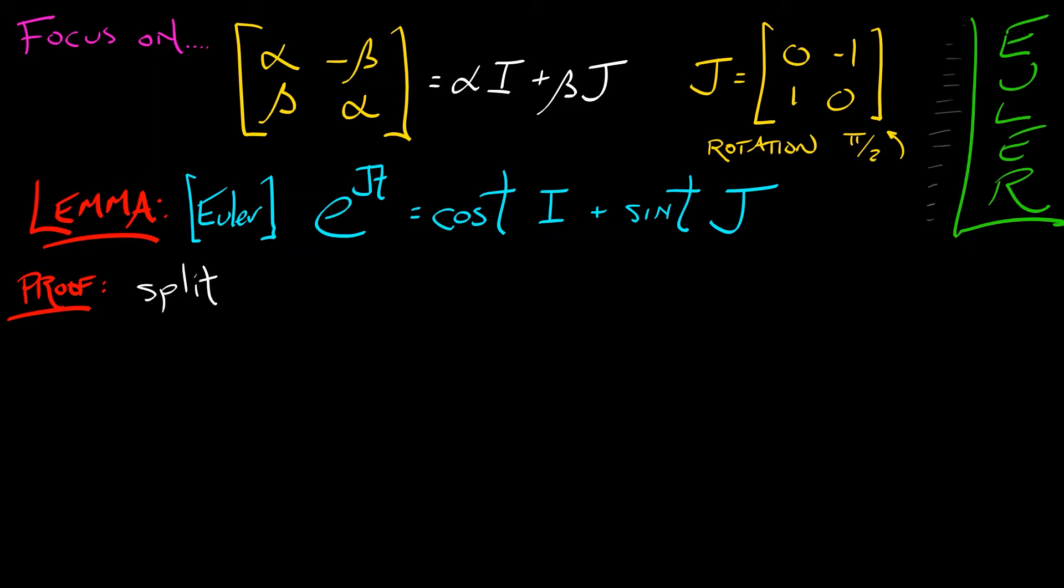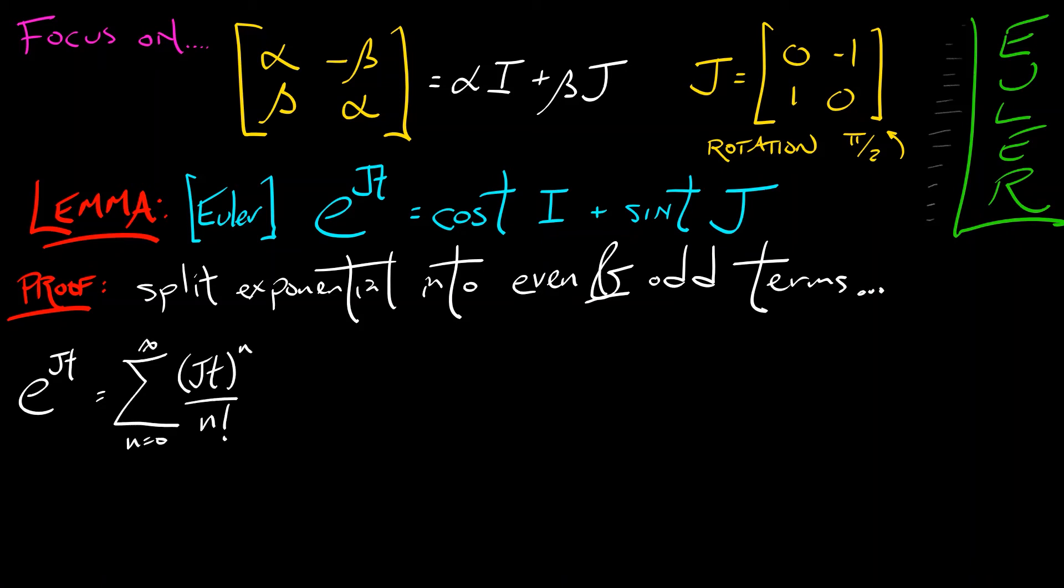It's basically the same proof as that of Euler's formula. I'm going to split the exponential up into even and odd terms. E to the JT is, by definition, the sum n goes from 0 to infinity of quantity JT to the n divided by n factorial.